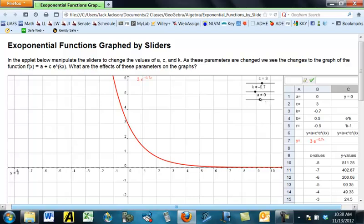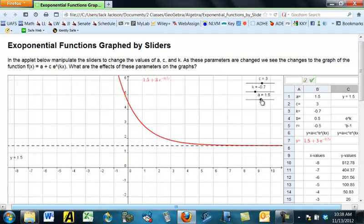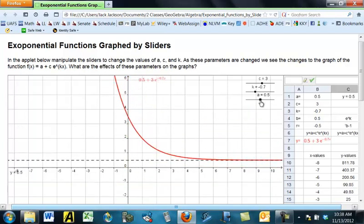Now what happens with A? Well, A is no surprise. The whole thing is a vertical shift. So, for example, if A is 1, notice we shifted it up. And notice that this one actually shifts up the horizontal asymptote as well. So now y equals A is the asymptote.